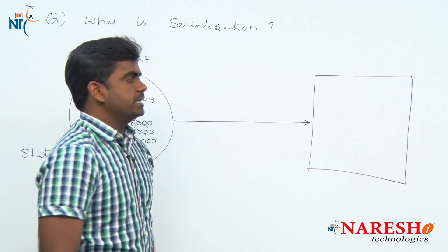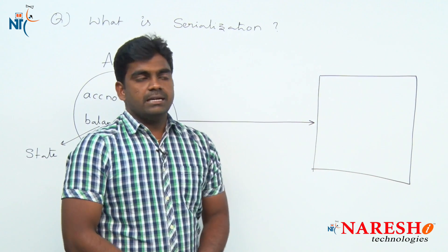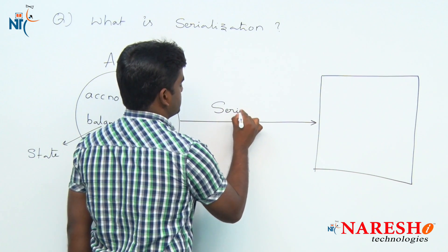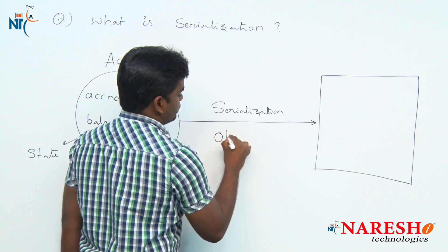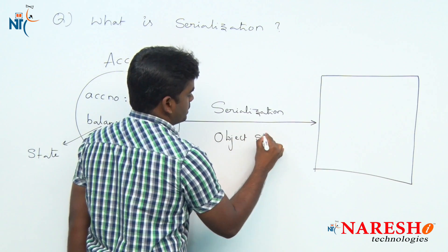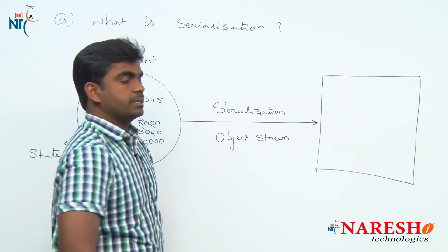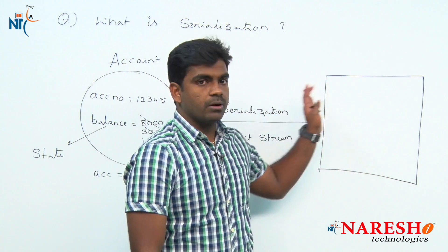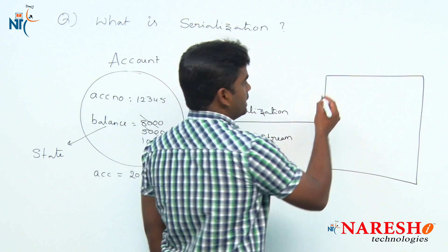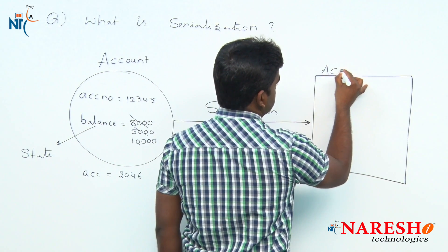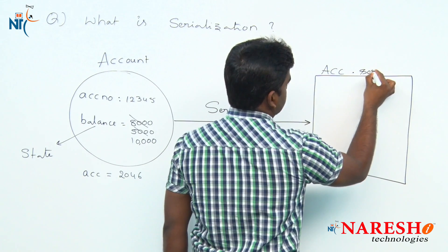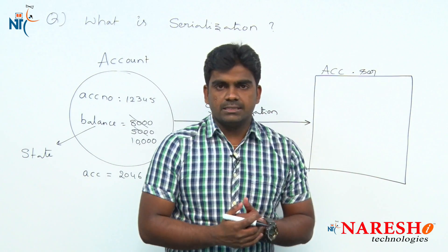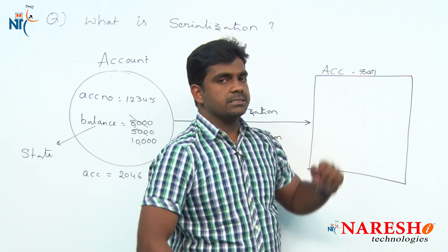At the core level, using a file system, converting object state into persistent state is called serialization. We can also call it object streams — writing the entire object into a file permanently. The file name can be anything, but the extension should be .ser, which is the serializable extension.